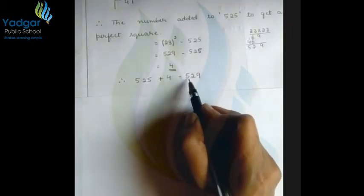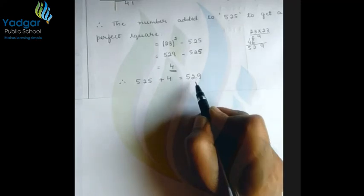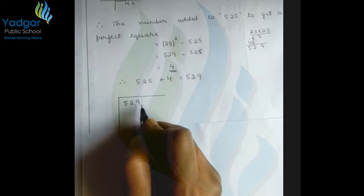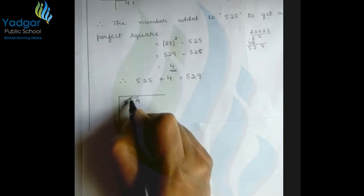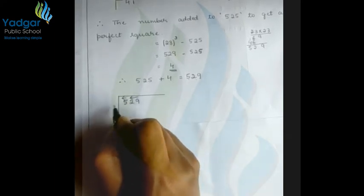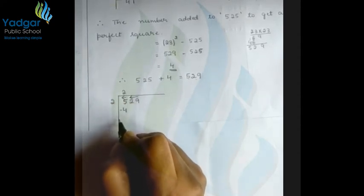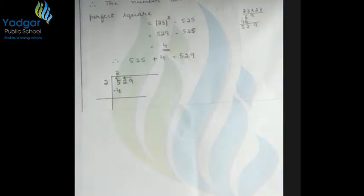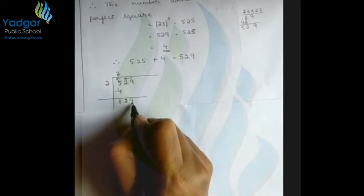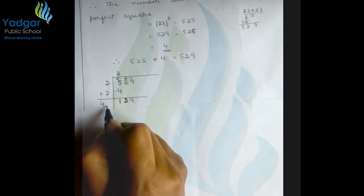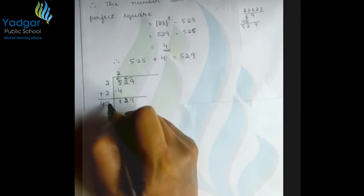529 is grouped as '5' and '29'. For the first group: 2×2=4, and 5 minus 4=1. Bring down 29 to get 129. We need to add the quotient digit 2 to itself: 2+2=4. Now find which digit multiplied gives the nearest value to 129.